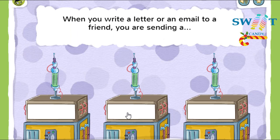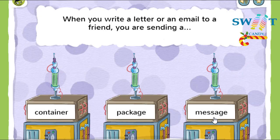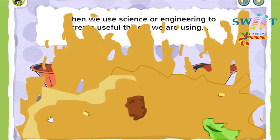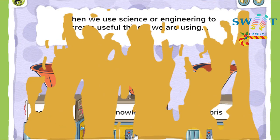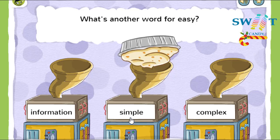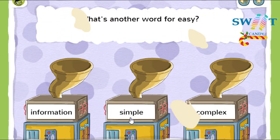When you write a letter or email to a friend, you're sending a message. A message is something you want to tell someone else. When we use science or engineering to create useful things, we are using technology. Technology is the use of science or engineering to create useful things. What's another word for easy? Simple! When something is simple, that means it does not have a lot of parts and it's easy to understand.